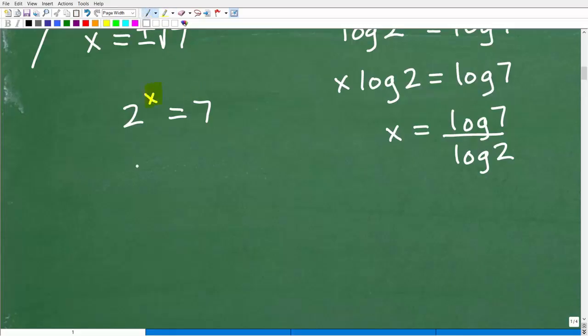So I'm like, okay, 2 to some power is 7. Well, let's just start putting numbers in here. 2 to the first power is just 2, right? 2 squared is, what, 2 times 2. That's going to be 4, okay? So 2 squared, that's 4.